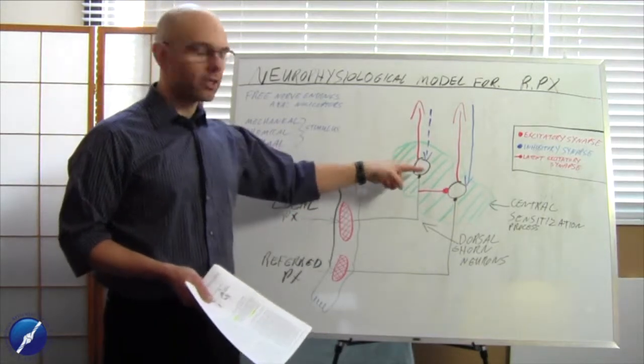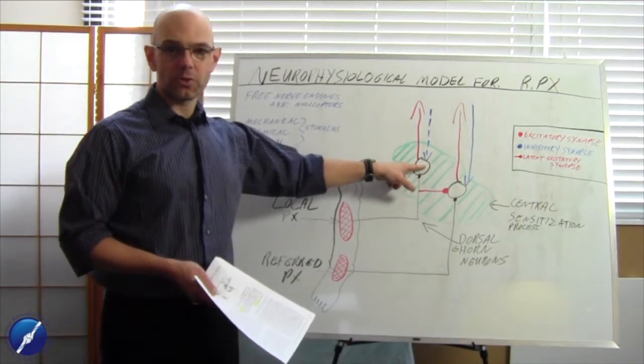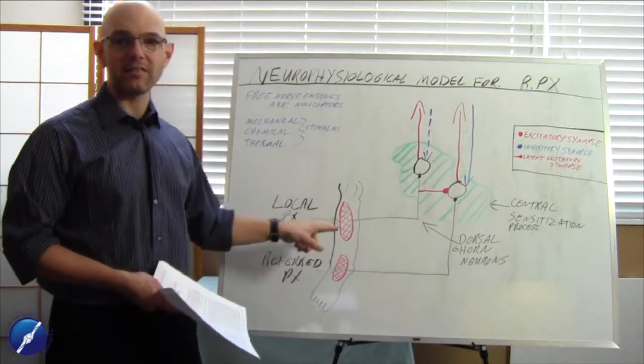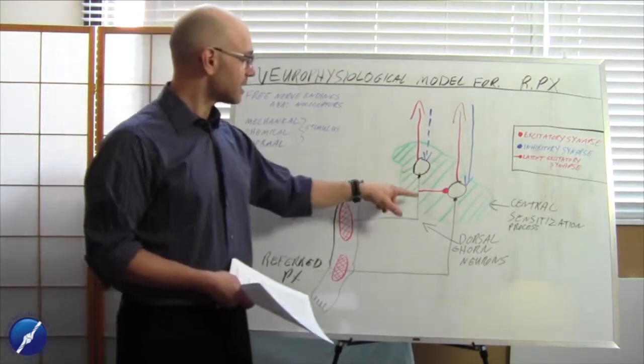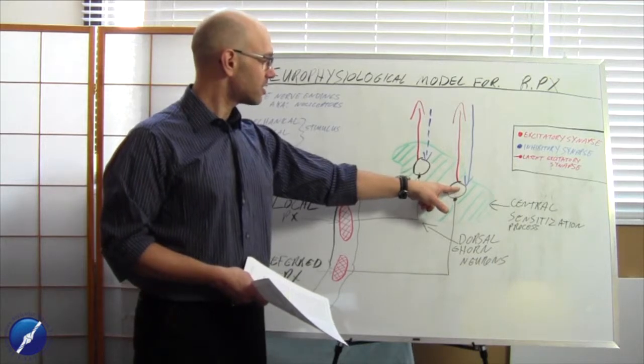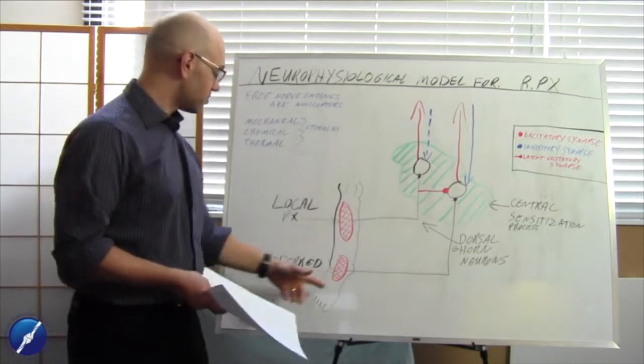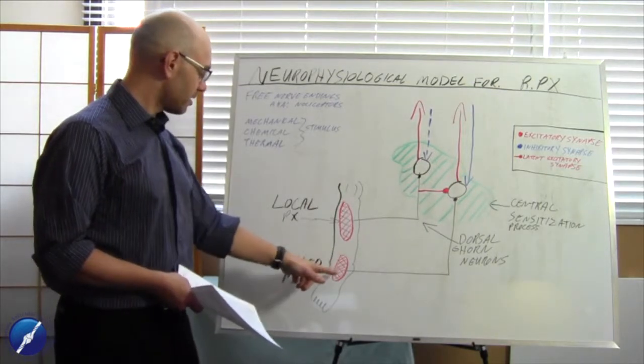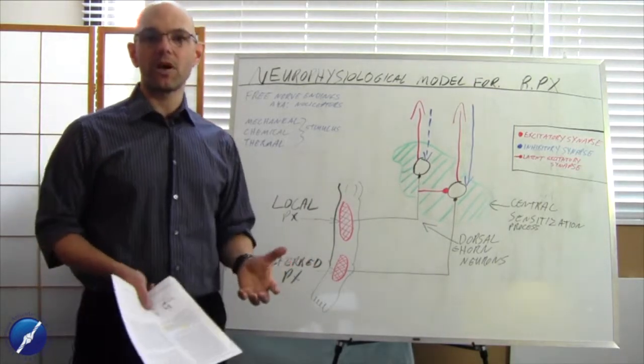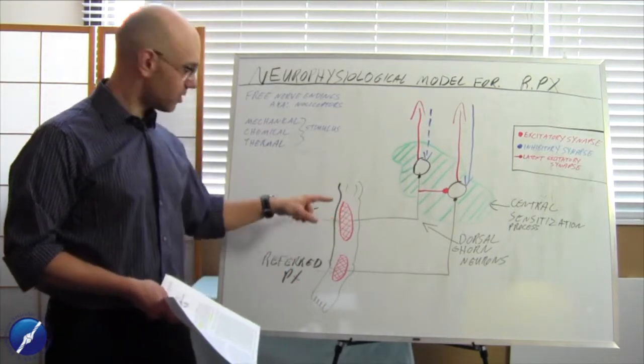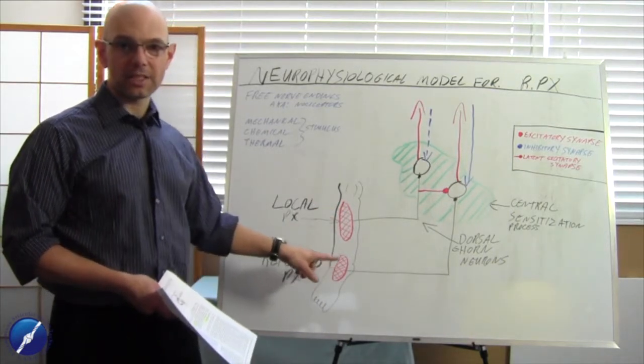So first you bang your knee, you irritate the first dorsal horn neuron, it sends a message up to the brain, you get this local pain activation, sort of perception. It has a latent excitatory synapse that sends another danger message up to the brain which then later on gives you that referred pain sensation. Now remember we talked about in the key features is that local pain comes first, referred pain comes second.